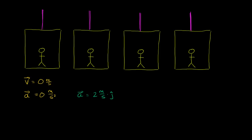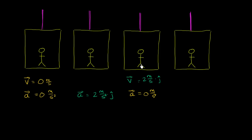Let's say we do that for one second. So we had no velocity, we accelerate at two meters per second squared for one second, and then we stop accelerating. The acceleration goes back to zero meters per second squared, but now we have some velocity — two meters per second in the upward direction.